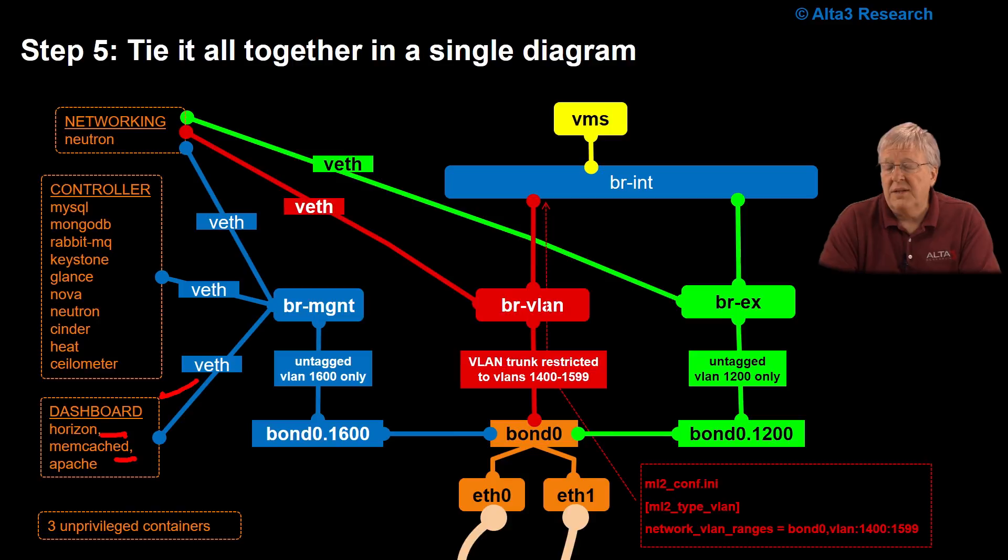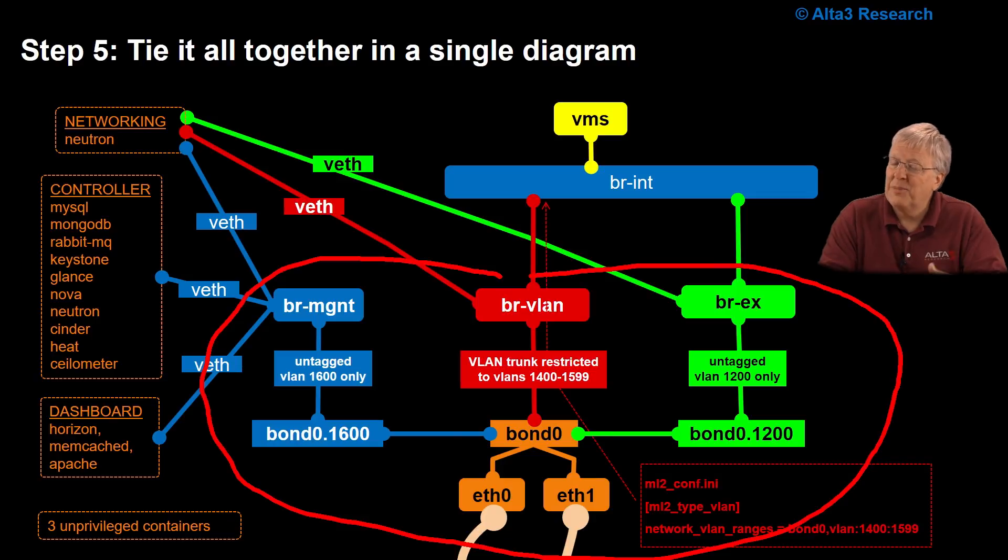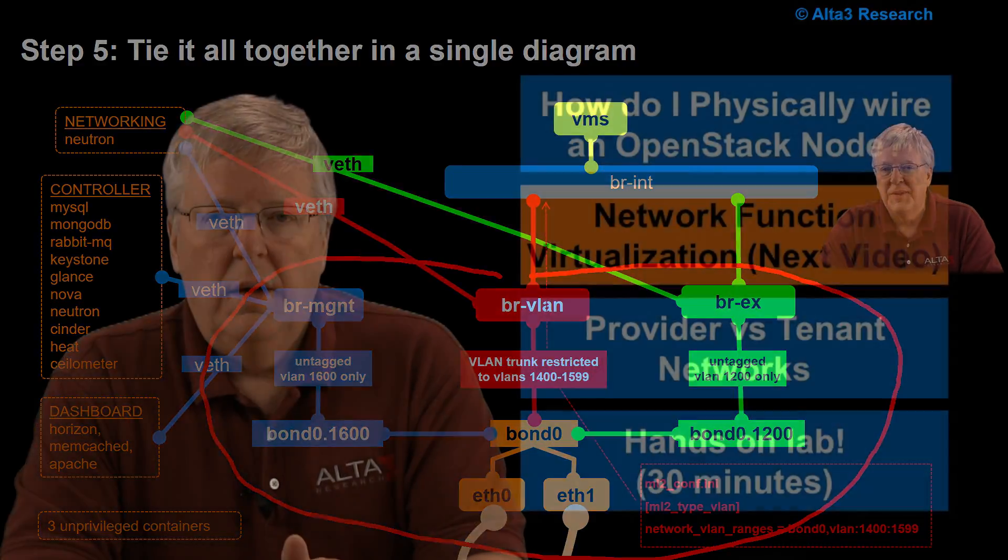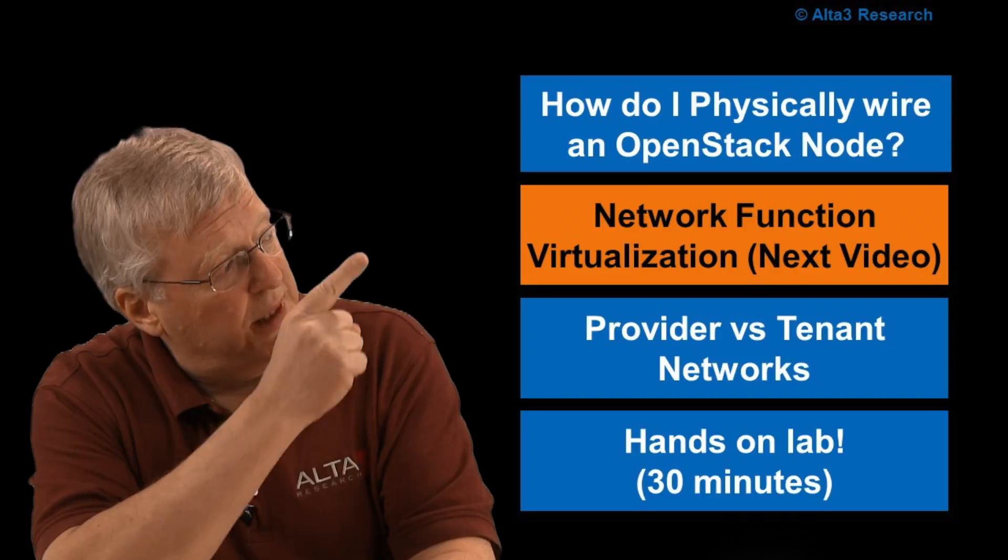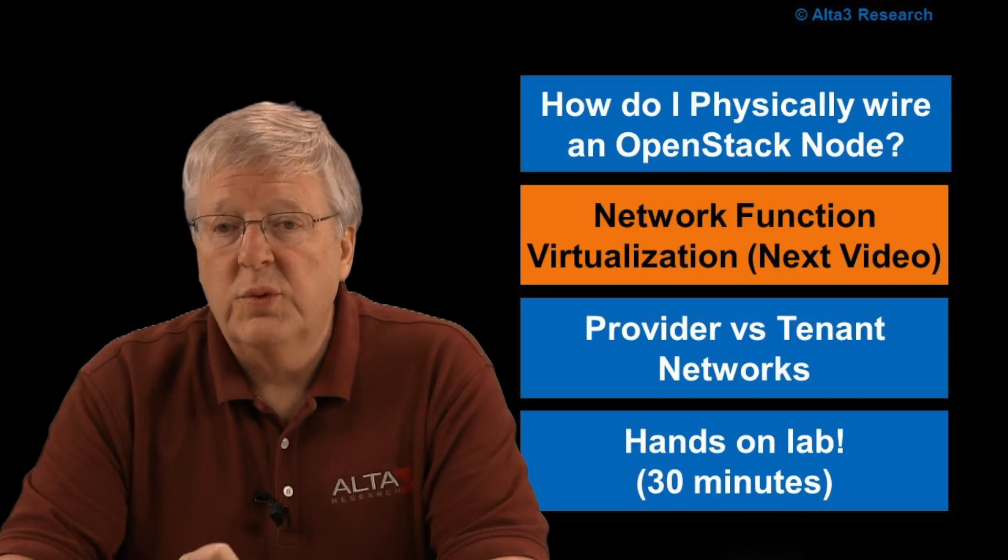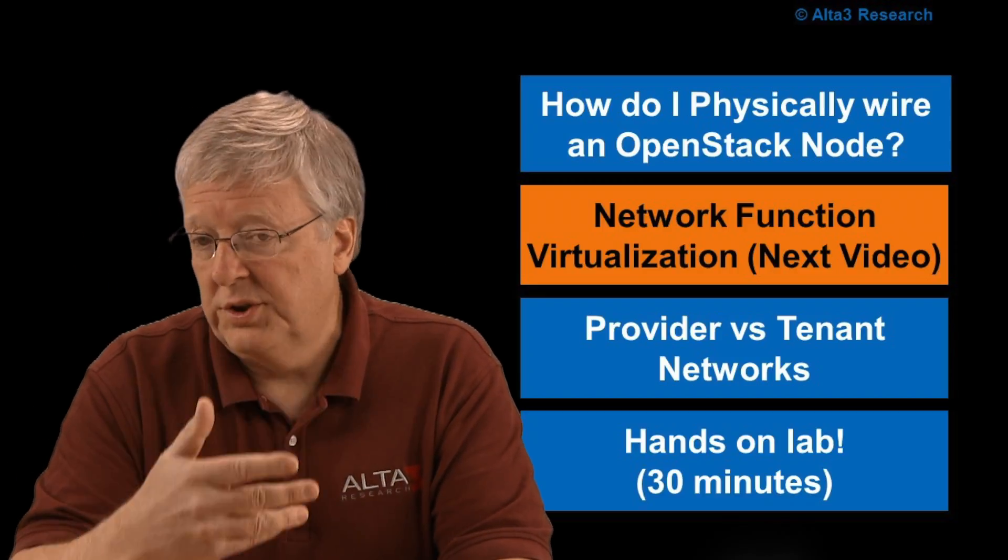So there you have it. This is what OpenStack refers to as the physical component, the part that you get to put in for every single node that you deploy. And then you put the OpenStack stuff on top of it. This completes the first of a four-part series. Go ahead and click on item number two right there, which will take you to network function virtualization. Ultimately, finishing up with the hands-on lab at the very end.